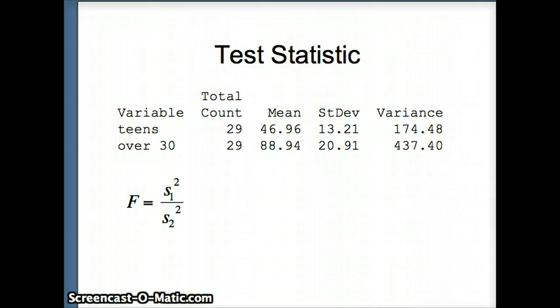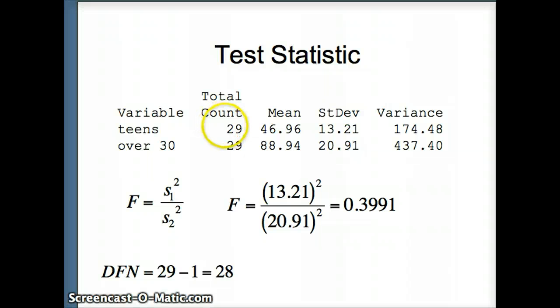So F is S1 squared over S2 squared, 13.21 squared over 20.91 squared, which gives us 0.3991. Now we also need to establish the degrees of freedom of the numerator and the degrees of freedom of the denominator. So dfn, 29 minus 1, 28. And of course dfd will be the same. dfd, 29 minus 1, also 28.